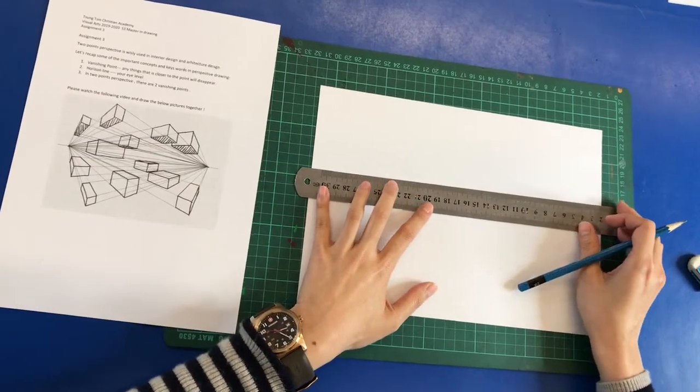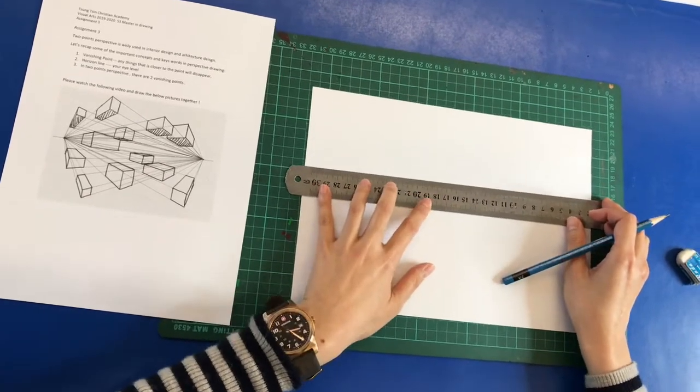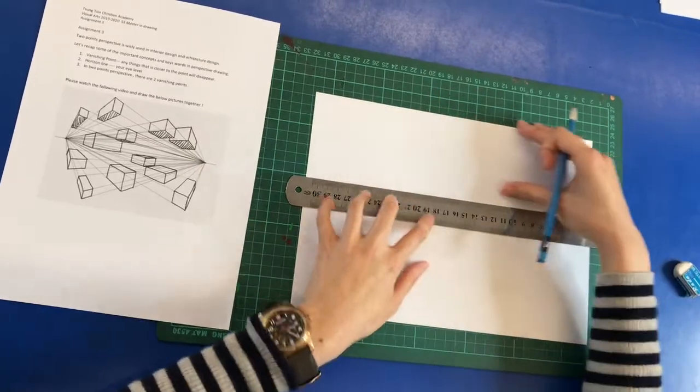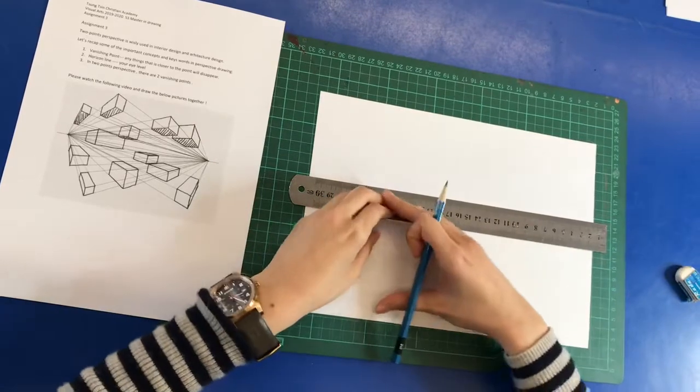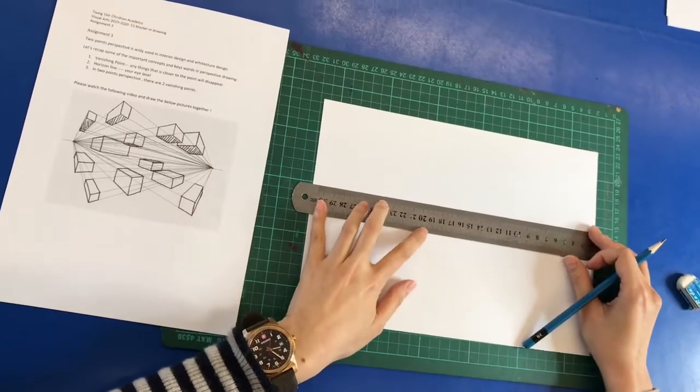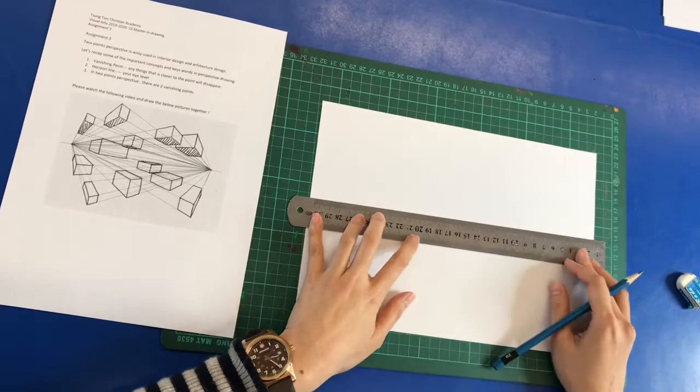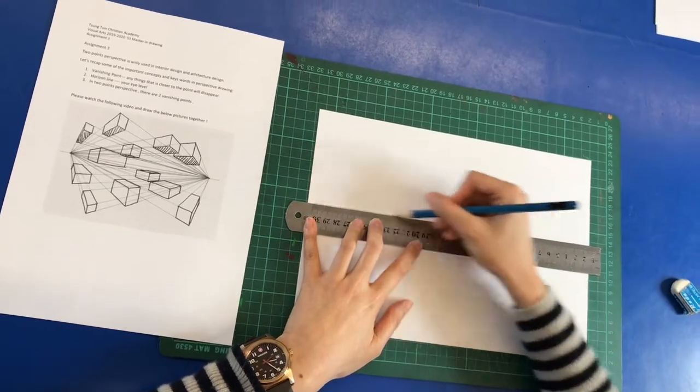The horizon line, which is the eye level. So for two-point perspective, we have to reserve half of the part for the upper drawing and the other half is for the bottom one. So don't draw your line too high or too low. For me, I will just draw it in the middle like this.